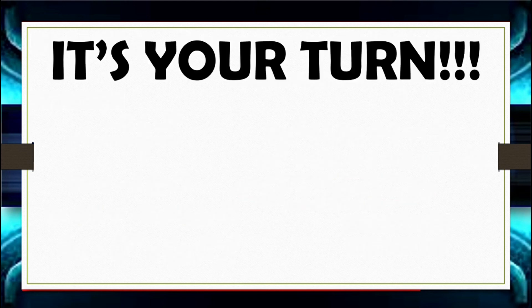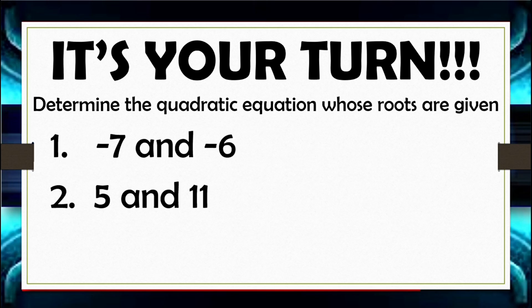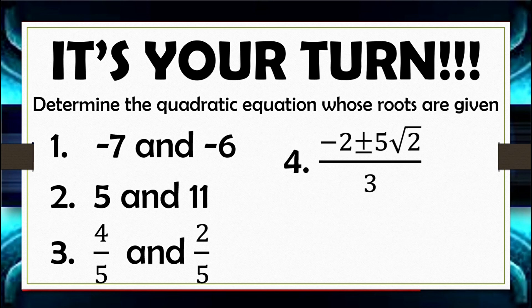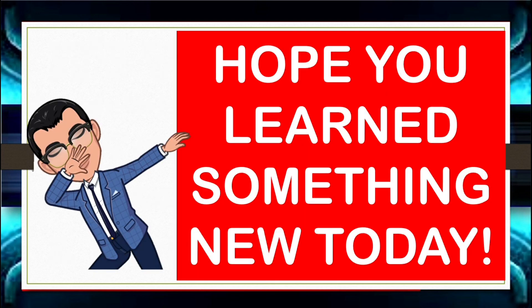Now it's your turn. Determine the quadratic equation whose roots are given: first, negative 7 and negative 6; second, 5 and 11; third, 4 fifths and 2 fifths; fourth, negative 2 plus and minus 5 square root of 2 all over 3; and fifth, 1 plus and minus square root of 5 all over 2. Hope you learned something new today.